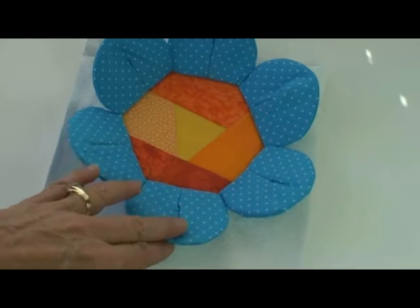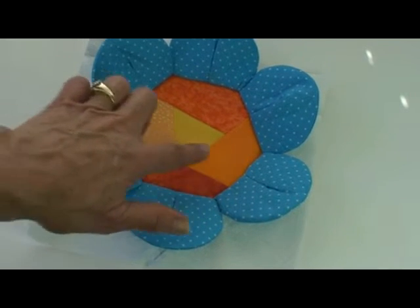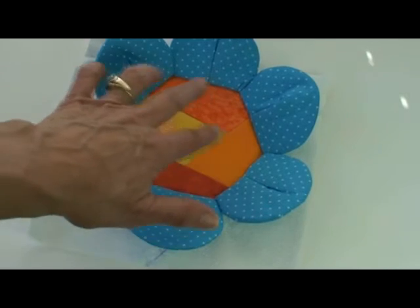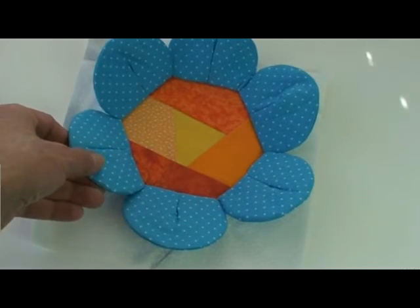In this video we're going to show you how to make this darling flower block. The pattern comes with different center patterns to paper piece, and then you add these dimensional petals and it just comes out darling.